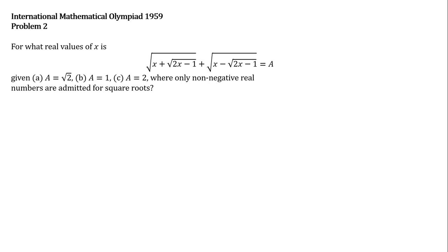Hello everyone. Today's problem is taken from the very first International Mathematical Olympiad. For what real values of x is the square root of x plus square root of 2x minus 1, plus the square root of x minus the square root of 2x minus 1, equal to a? Given a equals the square root of 2, a equals 1, and a equals 2, where only non-negative real numbers are admitted for square roots.